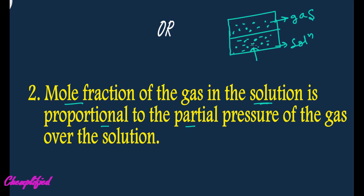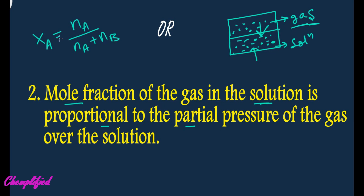It means the number of particles of the gas dissolved in the solution is directly proportional to the pressure exerted by the gas particles on the surface of the solution. Mole fraction is represented by xi or x. If there are two components a and b, the mole fraction of a is calculated as the number of moles of a divided by the number of moles of a plus the number of moles of b. For mole fraction of b, you write the number of moles of b in the numerator instead.